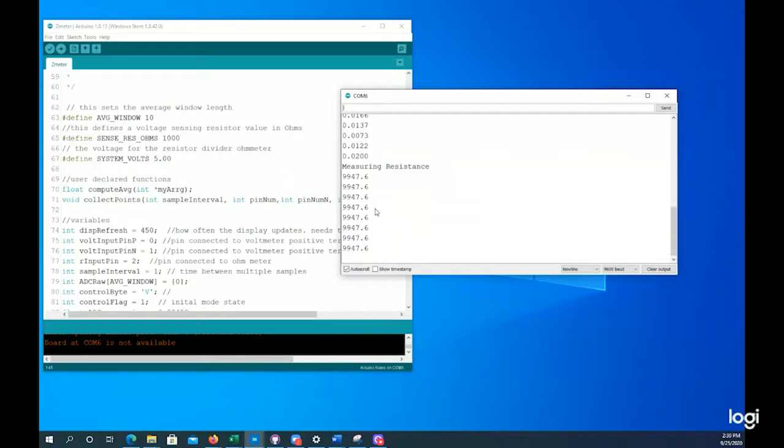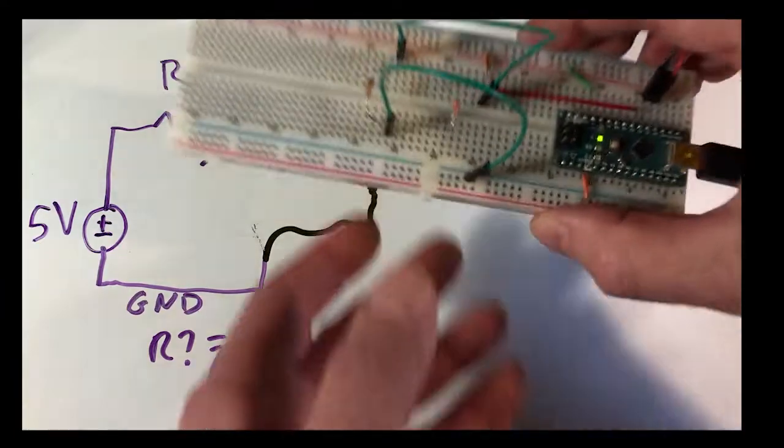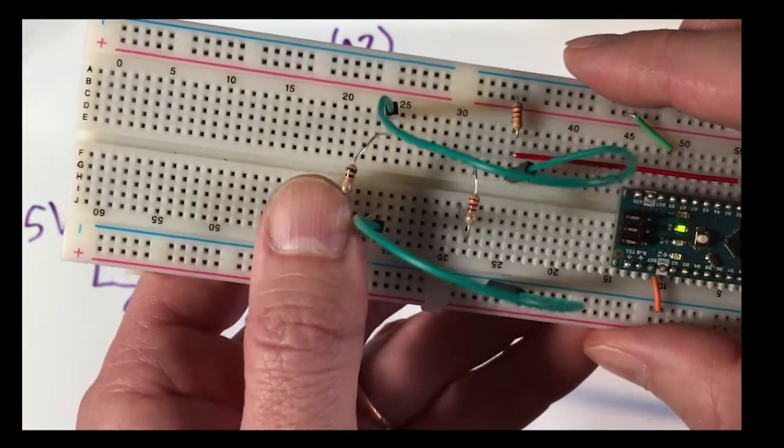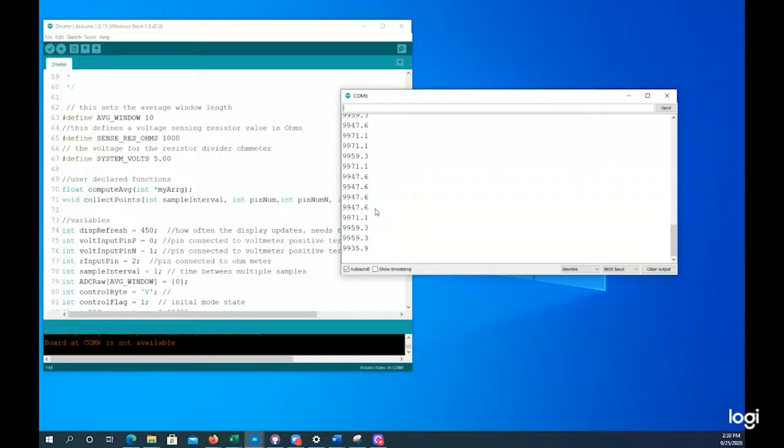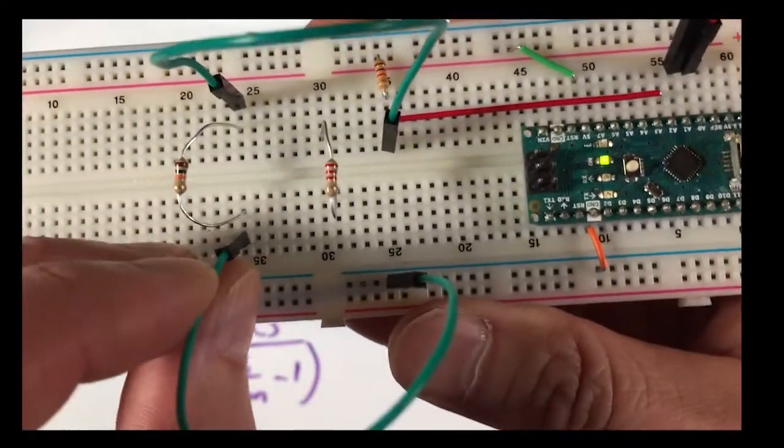And it's giving me a value for the resistance. So if we go back to the breadboard, you'll notice that that's a 10 kilohm resistor. And we're measuring 9953 ohms, or 9.953 kilohms. Which is pretty close to 10k.